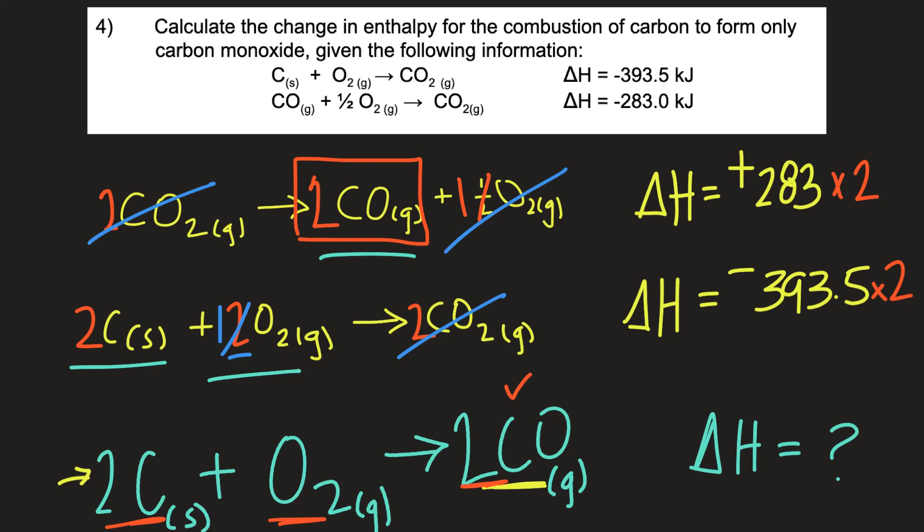So so far these have all added up. We've manipulated our delta H's as necessary. And then the last thing to do is to simply add these up. So multiply the positive 283 by 2 and the negative 393.5 by 2 and then add those up. And you'll get an overall delta H of negative 221.0 kilojoules.